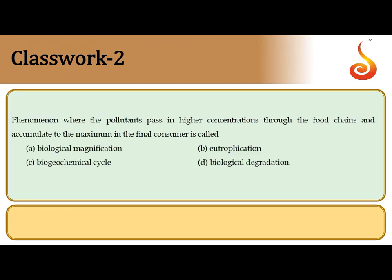The second question asks about the phenomenon where pollutants pass in higher concentration through the food chain. As we travel up the food chain, the concentration of a toxic substance keeps increasing — this is referred to as biological magnification or biomagnification. The correct answer is option A.